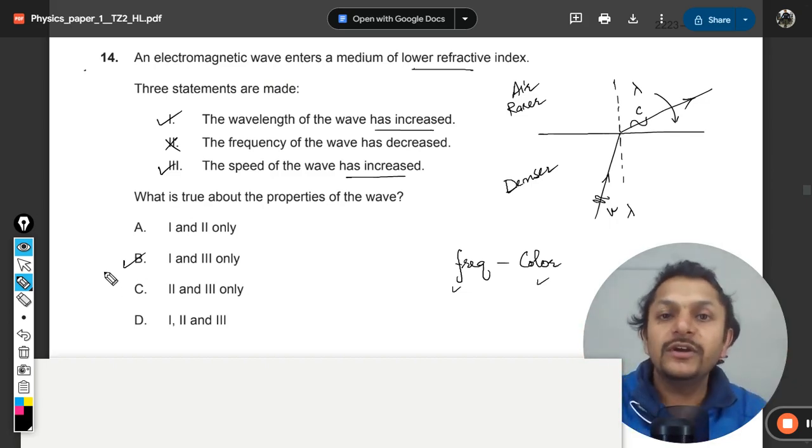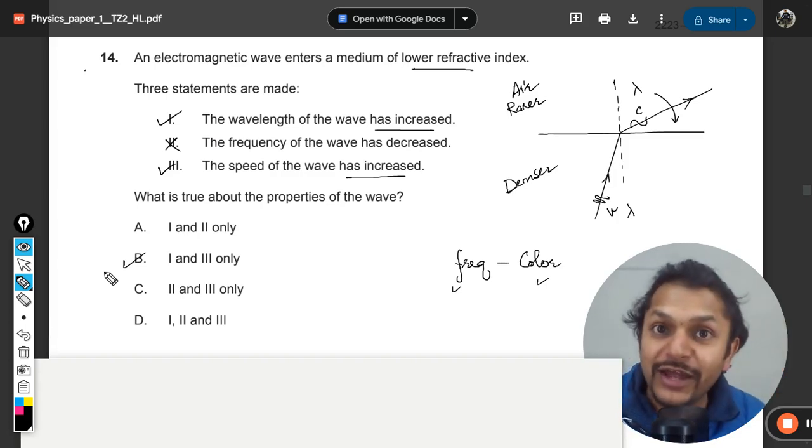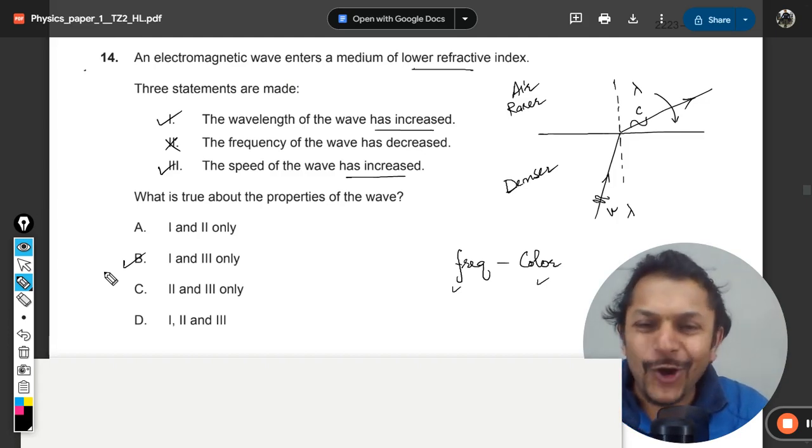And this is the rarer medium, so definitely the speed will increase anyways. So the answer for us is A and three, so answer will be B. And this is how we do this question. Okay dear students, thanks for watching the video. Please join the YouTube channel if you have yet not joined it. Yes, all the best. Bye, see you in the next video.